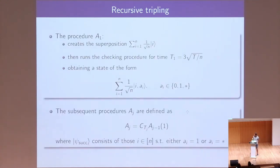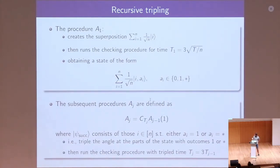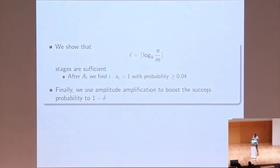And each subsequent procedure amplifies the state, the result of the previous procedure and runs checking circuit for the next time step. To amplify the amplitude, we must define what is our good part. And for us, the good part consists of those states that have either indicator equal to one, so this I solution, or equal to the stars, this indicator that more time is necessary, which means that I still has the potential to be a solution. Or in other words, we triple the angle as a good part of the state, and then we triple the checking time.